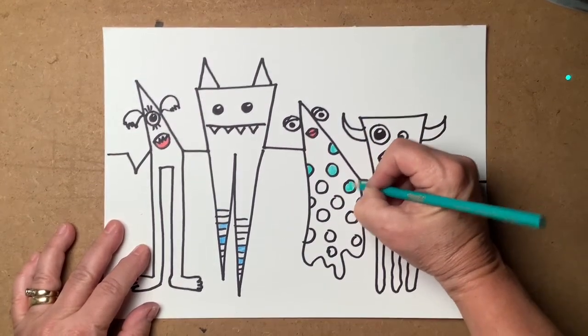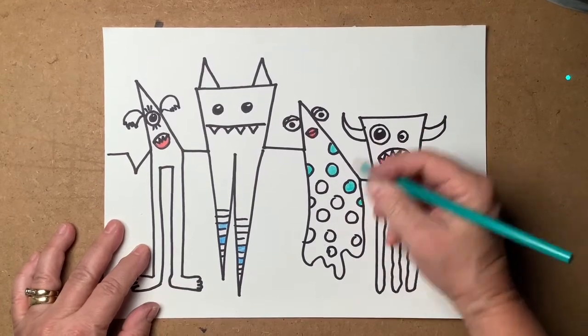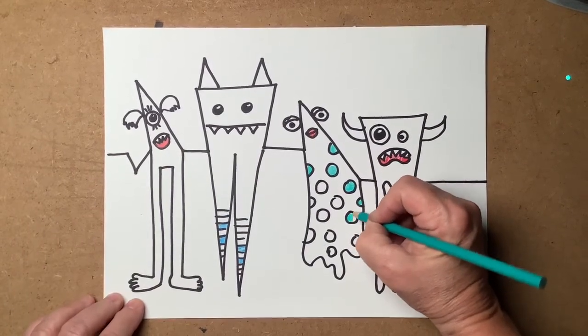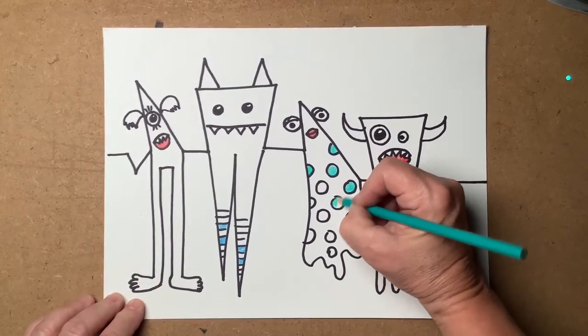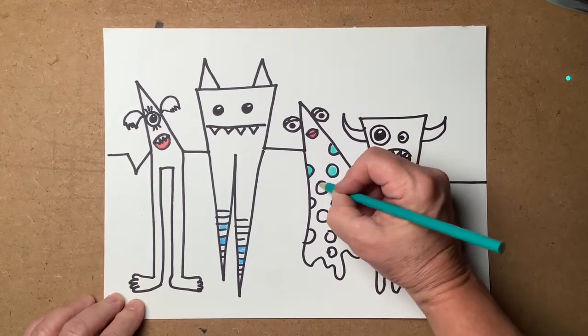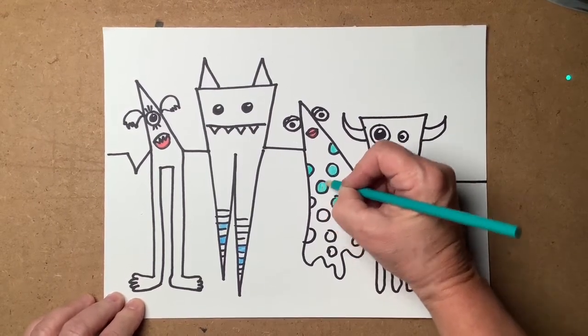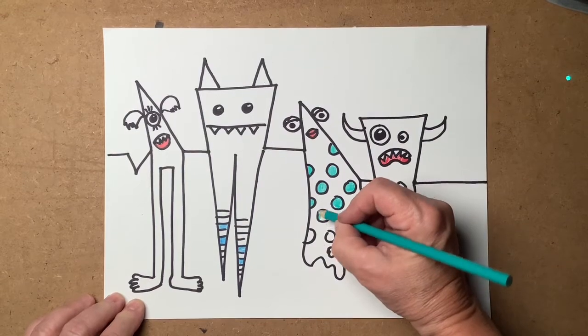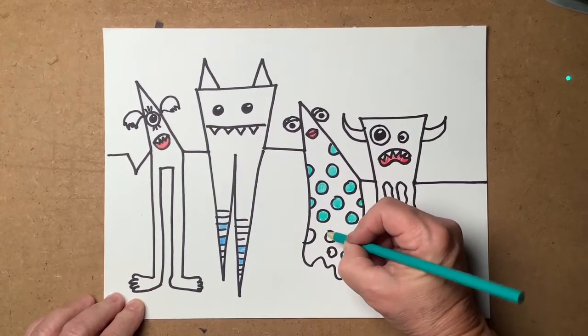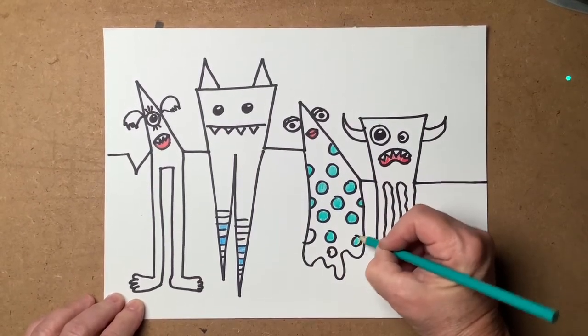All right. I'm going to keep filling in and coloring in parts of my monsters here. You can try anything with this horizon drawing, this weird jaggy line drawing game. You could make a cityscape. You could draw a crazy caterpillar or bug. I'd love to see what you come up with.